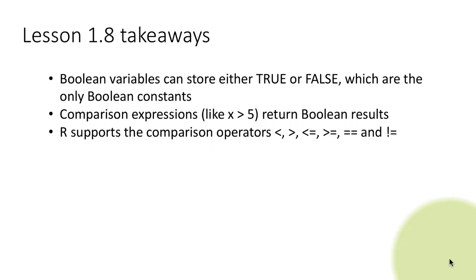We have learnt in this lesson that Boolean variables can store only the values true or false, and those are the only two Boolean constants. We also saw that comparison expressions — for example x greater than 5 — return Boolean results; in other words the result is either true or false. And we also saw that R supports these comparison operators: less than, greater than, less than or equal to, greater than or equal to, double equal to which is a comparison for equality, and not equal to, when you want to compare and see if two things are not equal.